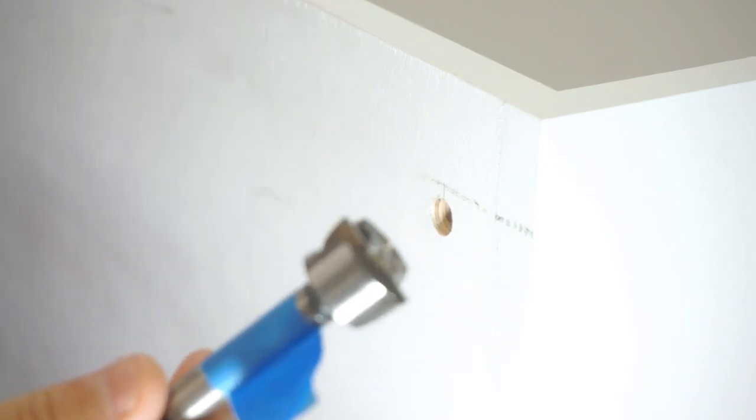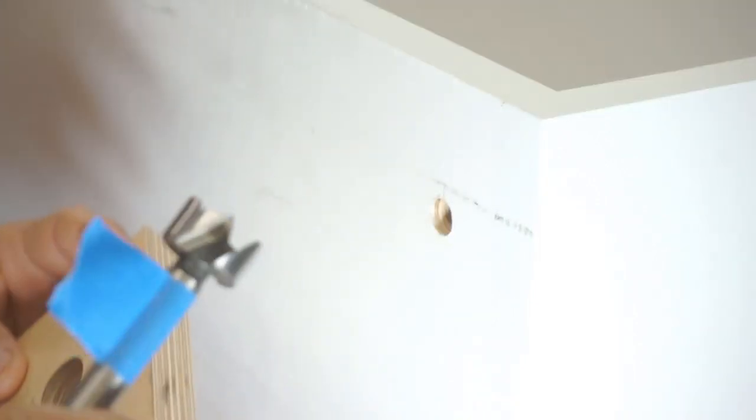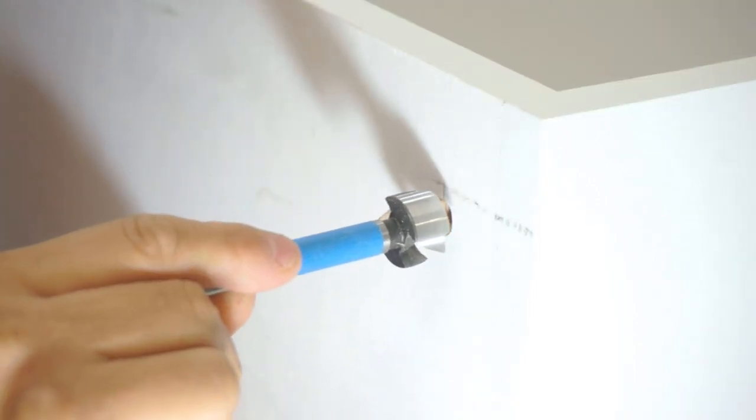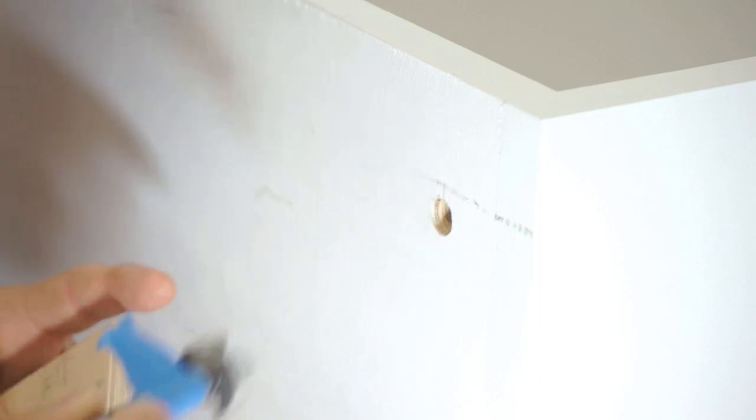So to do that we're going to use a Forstner bit. This is seven-eighths of an inch and it will be big enough for a clearance. But the issue that I have is once you have a hole you can't just put a Forstner bit or it will just walk around. So the trick is we're going to make a template.